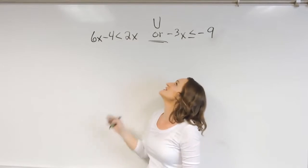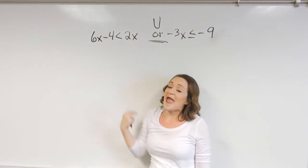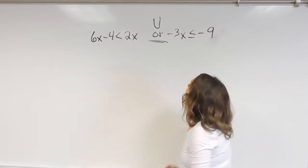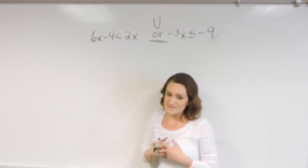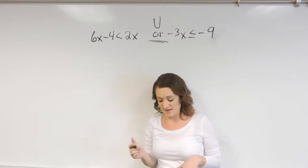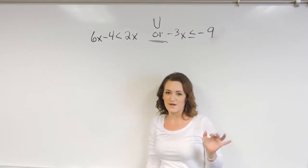Okay, so if you see the word 'or' that's asking you to find the union. If you see the word 'and' that's asking you to find the intersection. Otherwise 'or' represents union, so what we're going to do in order to find the union of two inequalities, well first we need to solve the two inequalities and graph them.